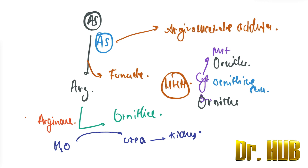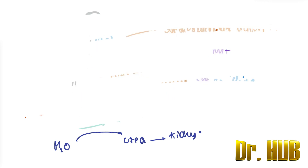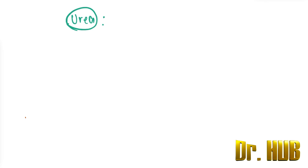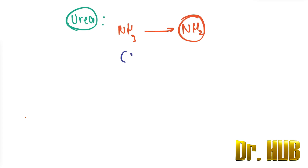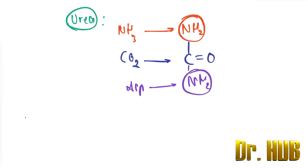It is also important to know the structure of urea. Ammonia (NH3) contributes the NH2 group, CO2 contributes the C double bond O, and aspartate contributes the other NH2 group. This is the structure of urea.